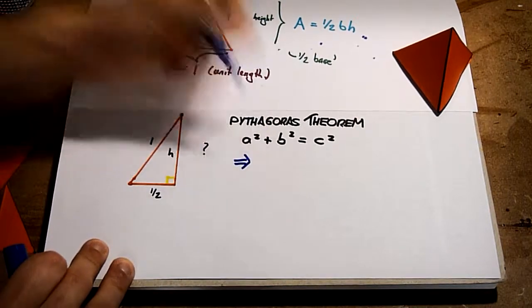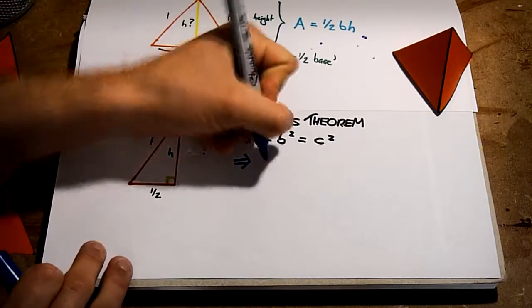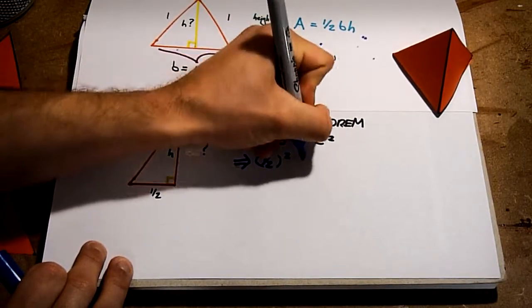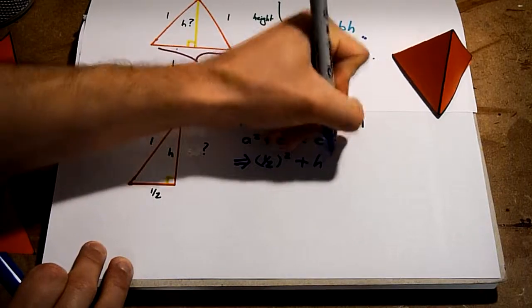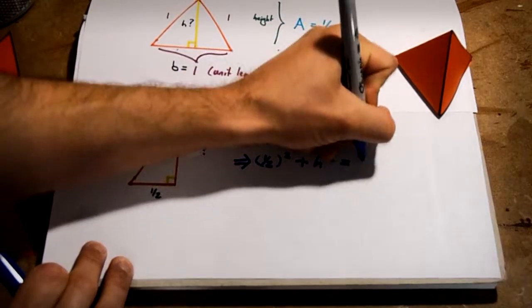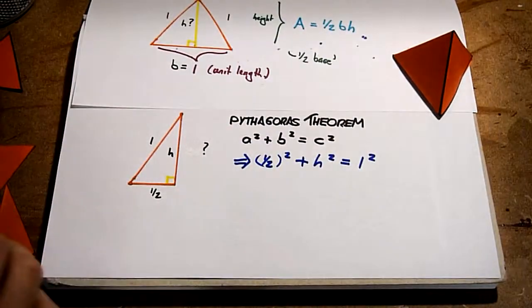a in this case is a half of the base, or a half, seeing how the side lengths are 1. b is h, the height of our equilateral triangle. And c is just one side of our equilateral triangle, or 1.